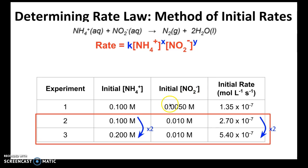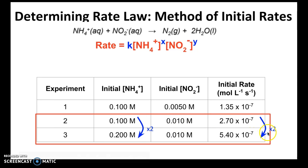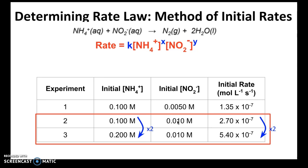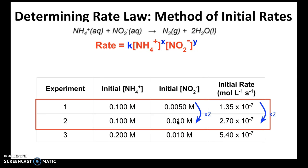Those two experiments are experiment two and three. You're given the rate for different initial concentrations of both reactants. By taking experiments two and three, you can determine the scalar factor for the concentration of NH₄⁺ and for the rate, and from there determine that the rate order with respect to NH₄⁺ is one. For NO₂⁻, you want two experiments where the initial concentration of NH₄⁺ is the same but NO₂⁻ differs — that's experiments one and two.